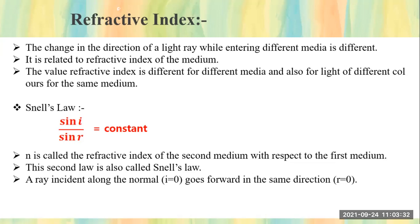The value of refractive index also differs for light of different colors for the same medium. White light from the sun consists of seven colors. When different colors of light — red, blue, yellow — enter a medium, the refractive index value differs for each color as well. Some colors have more wavelength, some have less, and depending on the light's properties, the refractive index of the medium changes.